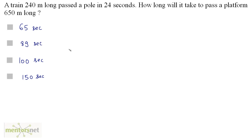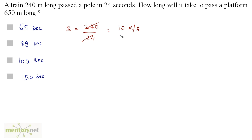A train 240 meters long passed a pole in 24 seconds. How long will it take to pass a platform 650 meters long? This train is 240 meters long and passed a pole in 24 seconds, meaning it traveled 240 meters. So we can calculate the speed: speed equals distance upon time, 240 upon 24, giving 10 meters per second. Now to cross a platform 650 meters long, the distance is the train's length plus the platform length: 240 plus 650 equals 890 meters.